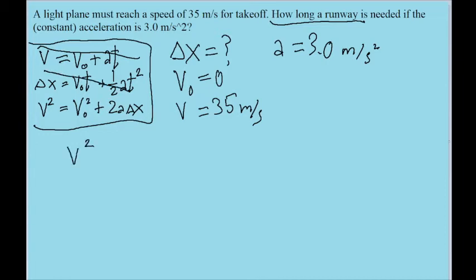So we'll want to use the equation for v squared, which tells us that it's equal to v naught squared plus 2 times the acceleration times the change in position. And we want to solve for the change in position, because that's what the problem is asking for.